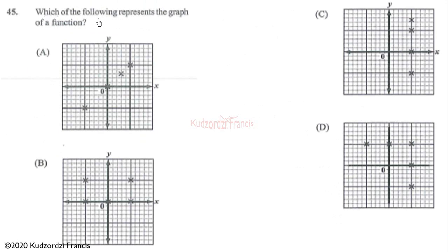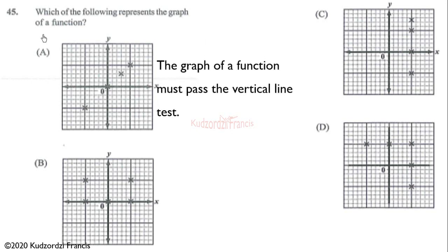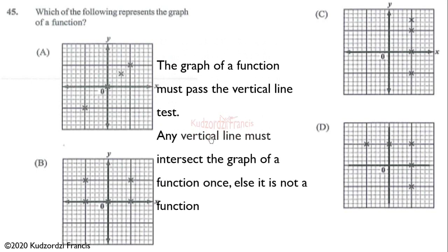Question 45 asks which graph represents a function. For a graph to be a function, it must pass the vertical line test. This means that if you draw any vertical line across the graph, it must intersect the graph at one and only one point.